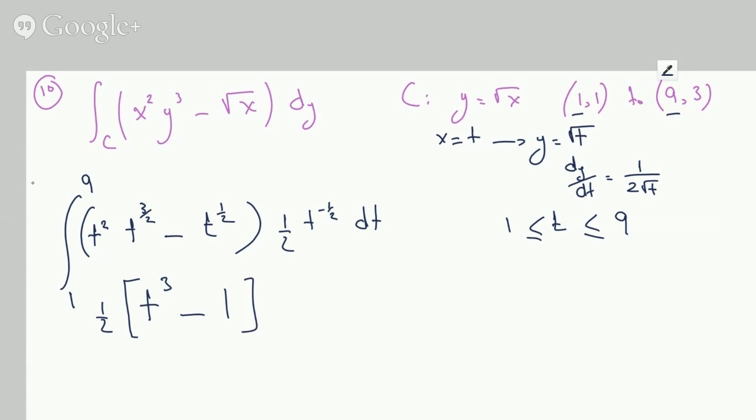We will integrate this from 1 to 9, so this becomes one half t to the fourth over 2 minus t from 1 to 9. This becomes one half times 9 to the fourth over 2 minus 9.